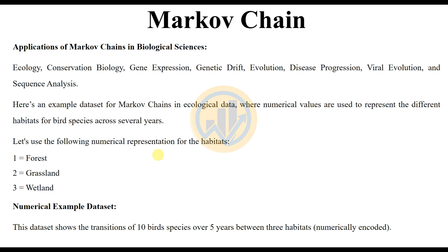Here is an example using ecological data, where numerical values are used to represent different habitats for bird species across several years. The numerical representation for the habitats is: 1 for forest, 2 for grassland, and 3 for wetland. The dataset shows the transitions of ten different bird species over the last five years between these three habitats.